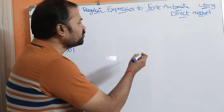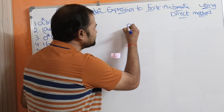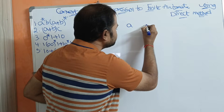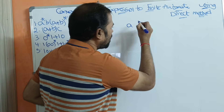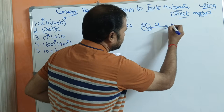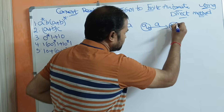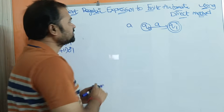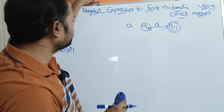First, let us see the simple regular expressions. Let the regular expression be A. Let the current state be Q0. Q0 on A will go to the next state — let it be the final state. This is the finite automata for the regular expression A.